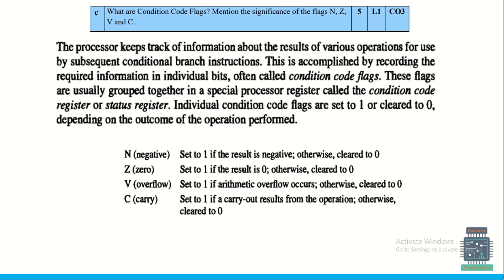Condition code flags N, Z, V, C indicate the condition of program execution. N (Negative) is set to 1 when the ALU result is negative. Z (Zero) is 1 when the result is 0. V (Overflow) is 1 when a register overflow occurs. C (Carry) is 1 when a carry is generated from the result.